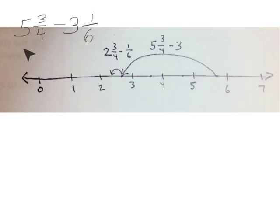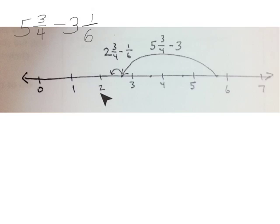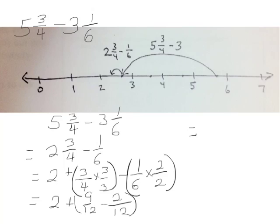In this problem, we're doing 5 and 3 fourths take away 3 and 1 sixth. First, we're going to estimate our answer by looking at it on a number line. Here we have 5 and 3 fourths; when we take away 3, we'd be at 2 and 3 fourths. 2 and 3 fourths take away 1 sixth tells us our answer is going to lie between the whole numbers 2 and 3, so our answer should be a mixed number, 2 and something.